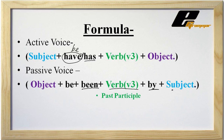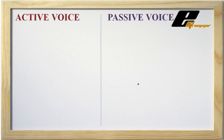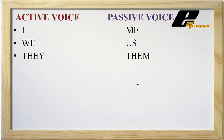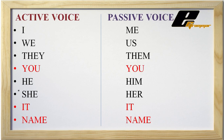There are certain changes that happen with the subject when converting from active to passive. 'I' becomes 'me', 'we' becomes 'us', 'they' becomes 'them', 'you' remains 'you', 'he' becomes 'him', 'she' becomes 'her', 'it' remains 'it', and a name remains a name. So 'you', 'it', and names do not change, but 'I', 'we', 'they', 'he', and 'she' do change.